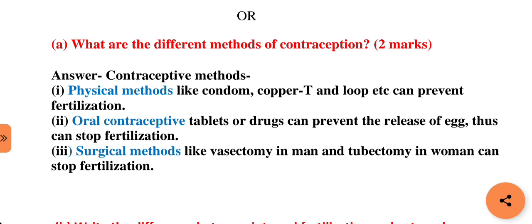Our next question is: what are the different methods of contraception? Different methods of contraception are: first, physical methods like condom, copper T, and loop etc. can prevent fertilization. Next method is oral contraceptive tablets or drugs which can prevent the release of egg, thus stopping fertilization. The third method is surgical methods like vasectomy in men and tubectomy in women, which can stop fertilization.